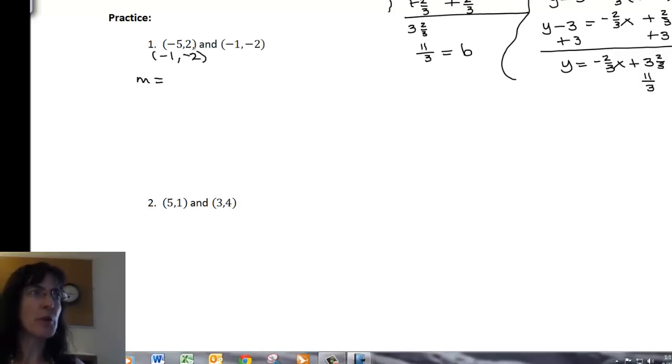So my slope, remember I take the difference in these two first. So it'll be 2 minus negative 2 over negative 5 minus negative 1.